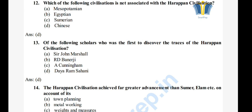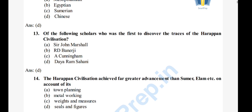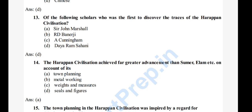Question 14: The Harappan civilization achieved far greater advancement than Sumer, Elam, etc. on account of its — A) town planning, B) metalworking, C) weight and measures, D) seals and figures. The right answer is option D, town planning. Harappan civilization showed greater advancement than Sumerian and Elamite civilizations through its town planning.